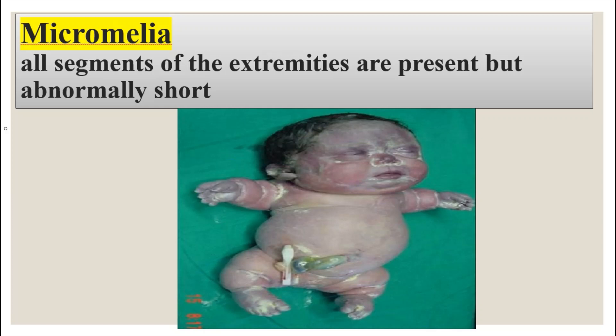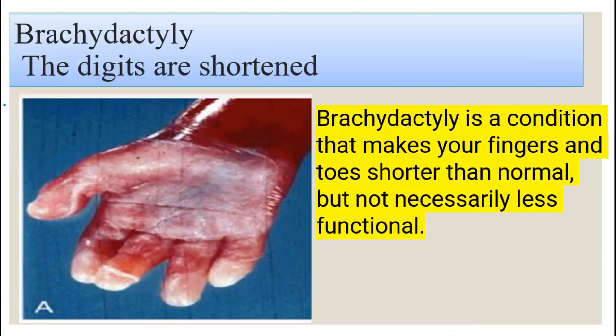Micromelia is a condition where all segments of the extremities are present but abnormally short. Dwarfs have a condition called micromelia. Brachydactyly is where you have shortened digits — a condition that makes your fingers and toes shorter than normal, though not necessarily less functional.